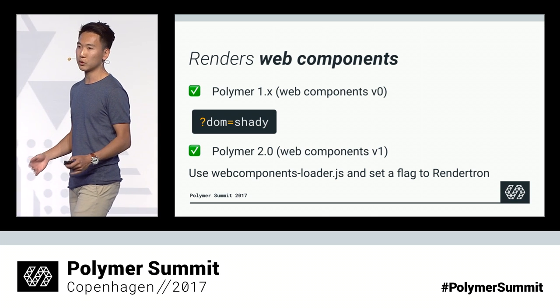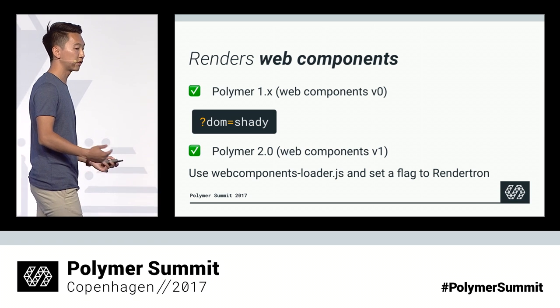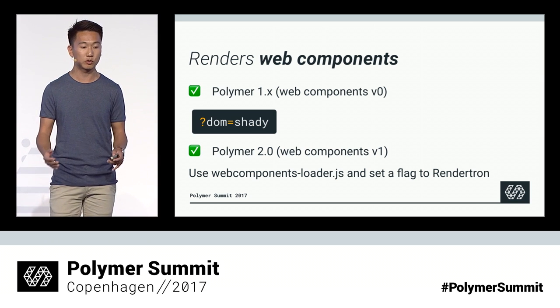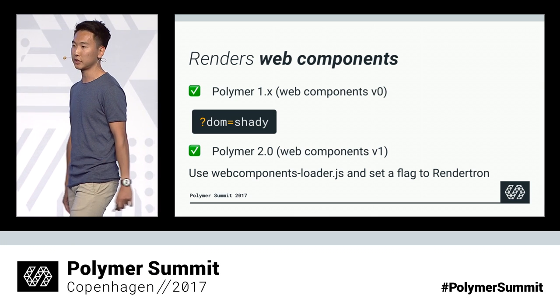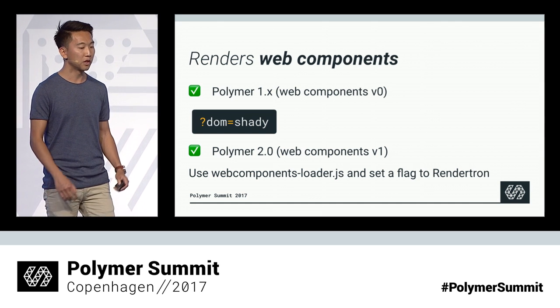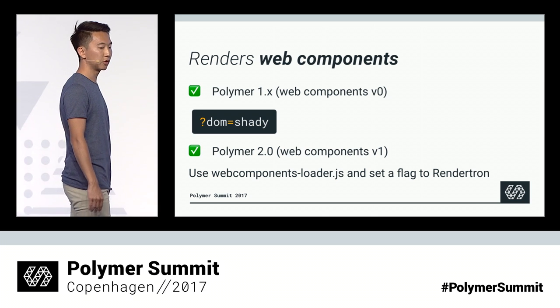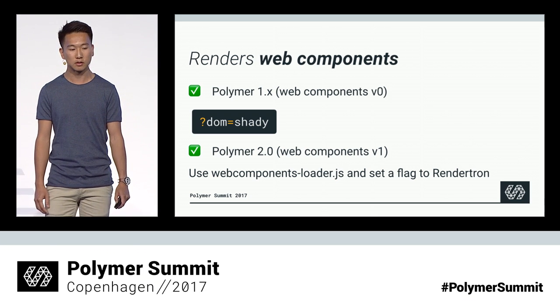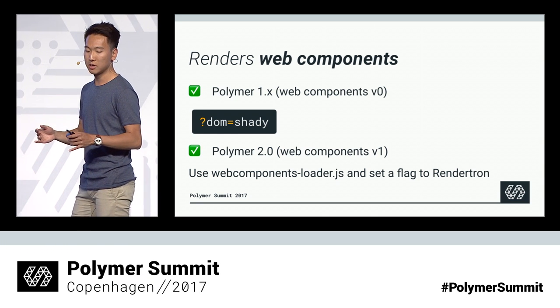So what do you need to do to enable this behavior? With Polymer 1, this is super easy, and Rendertron doesn't actually need to do anything. Simply append DOM equals Shady to the URLs that you pass to Rendertron, and Polymer 1 will ensure that Shady DOM is used. With Polymer 2 and with Web Components v1, it's recommended you use webcomponents-loader.js, which pulls in all the right polyfills on different browsers. You then set a flag to Rendertron telling it that you're using Web Components, and it will ensure that the necessary polyfills needed for serialization get enabled.